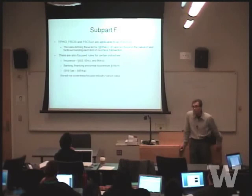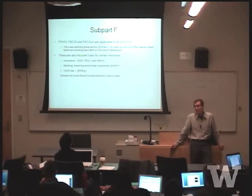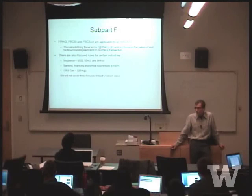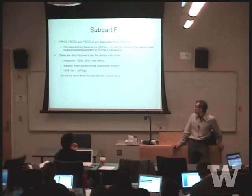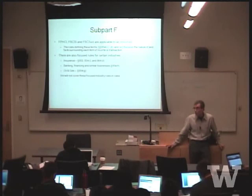These three categories — foreign personal holding company income, foreign base company sales income, and foreign base company services income — are general rules applicable to all industries. There are also specific special rules dealing with certain industries: insurance, banking, finance, and oil and gas. Those are available to review, but we won't cover them in class because they are specialized in nature.